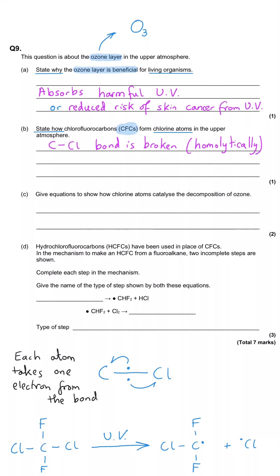And we end up with a carbon atom with a free radical on and a chlorine atom with a free radical on. And it's that chlorine atom with the free radical that is so reactive.